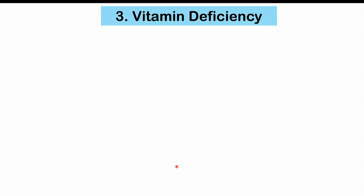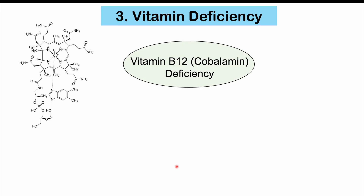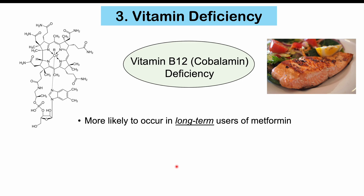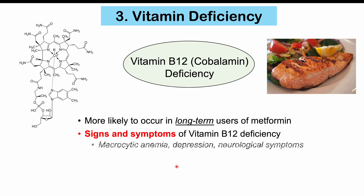The third important consideration with regards to metformin that is not often discussed is vitamin deficiency. Individuals who are on metformin can have a vitamin B12 or cobalamin deficiency. This is more likely to occur in long-term users of metformin. In some patients the vitamin B12 deficiency can be severe enough to cause signs and symptoms including macrocytic anemia, depression or other psychological findings, and neurological symptoms including paresthesias — numbness and tingling sensation in the extremities.